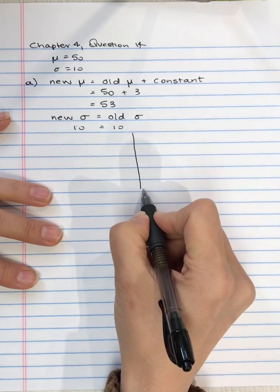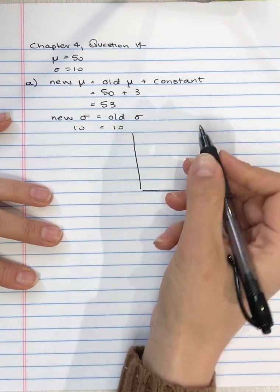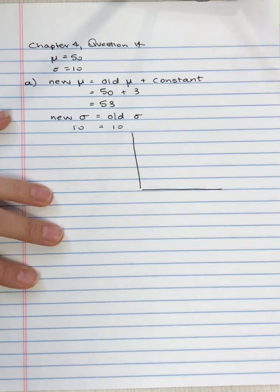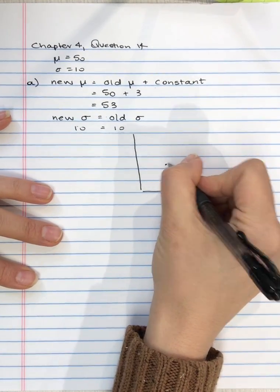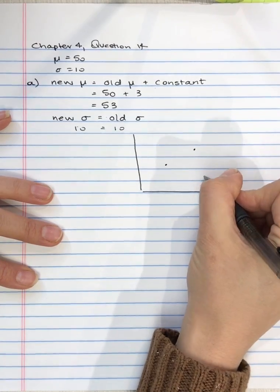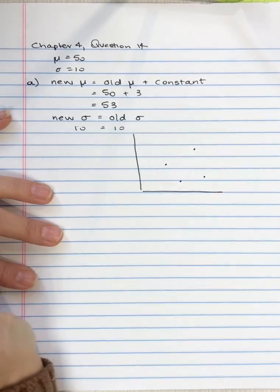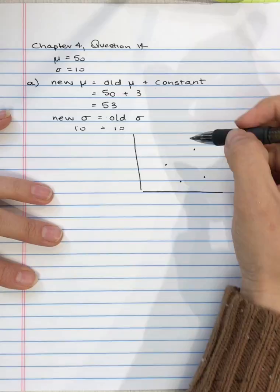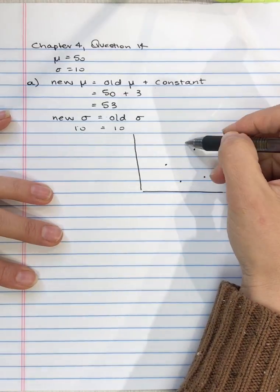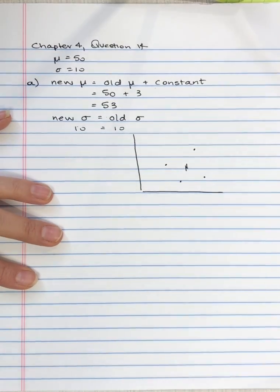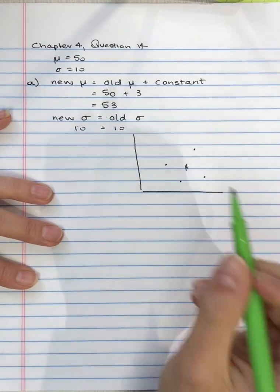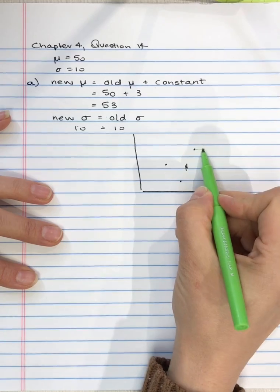In our old distribution, we had some scores that look like this, and our mean was somewhere in here. If we add three to every score, each of these scores moves by three, and so the mean moves by three.